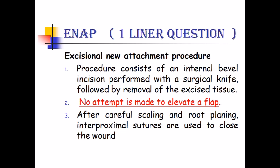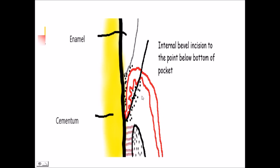The excision new attachment procedure — as the name suggests, we will be removing tissues in order to attain new attachment. It consists of an internal bevel incision performed with a surgical knife, followed by removal of the excised tissue. No attempt is made to elevate the flap, and after thorough scaling and root planing, sutures are given. We give an internal bevel incision to the point below the bottom of the pocket, remove the inflamed tissues, and do thorough scaling and root planing without raising the flap.